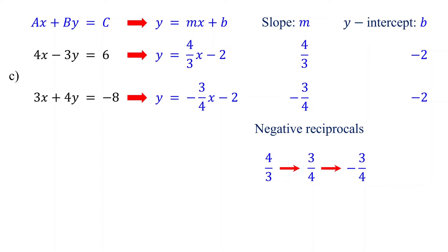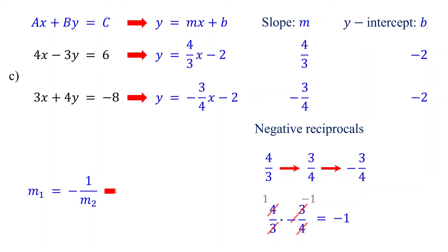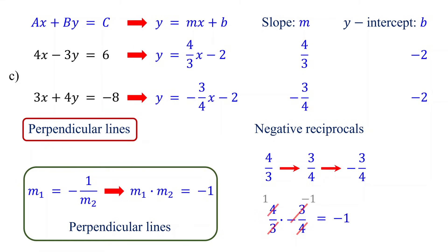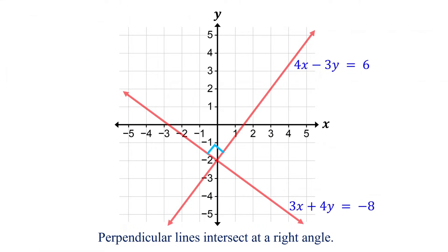Multiplying negative reciprocals always results in negative 1. That means 4 thirds times negative 3 fourths equals negative 1, because the 4s simplify to 1, the 3 and negative 3 simplify to negative 1, and 1 times negative 1 is negative 1. When the slopes of two lines are negative reciprocals, meaning their product equals negative 1, the lines are perpendicular. Therefore, these equations represent perpendicular lines. If you graph them, you will see that the lines intersect at a right angle, confirming they are perpendicular.